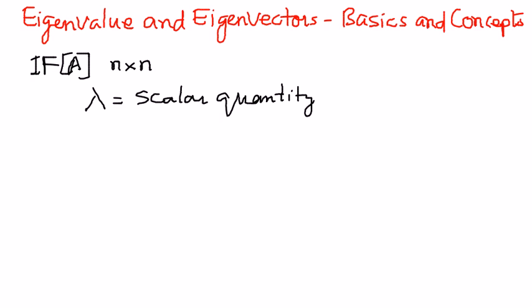Lambda, by the way, is a Greek alphabet, Greek letter, and we normally use a lot of Greek letters in math and in application of math, math problems. So if lambda is a scalar quantity, call the eigenvalue of matrix A.